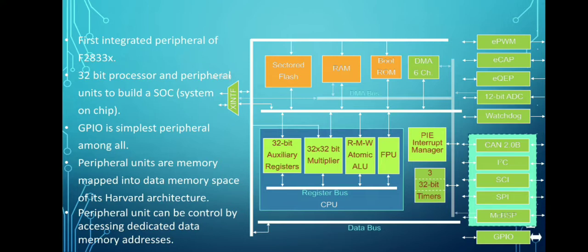The device has not only a 32-bit processor core but also all the peripheral units to build a single chip control system. These integrated peripherals give the F2833x an important advantage over other devices. GPIO is the simplest peripheral among all peripheral units. All peripherals are memory mapped into data memory space, meaning we can control peripheral units by accessing dedicated data memory addresses.